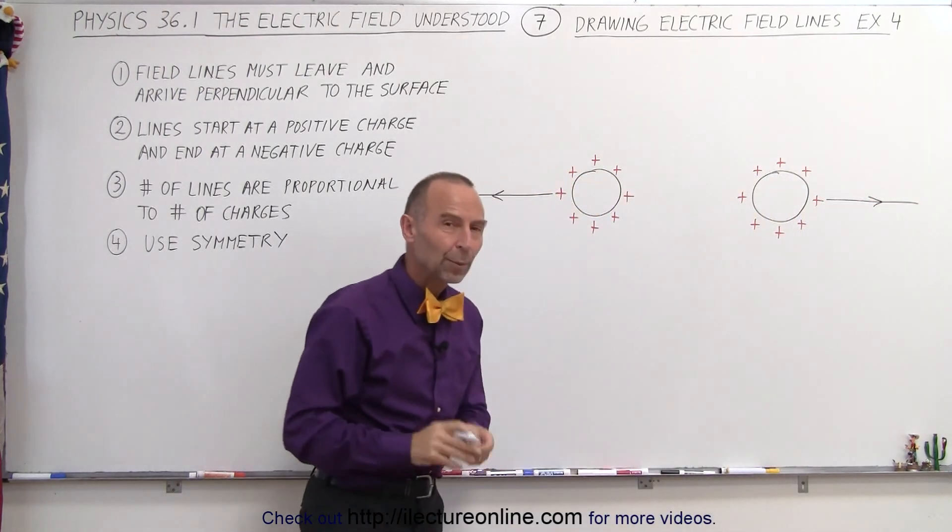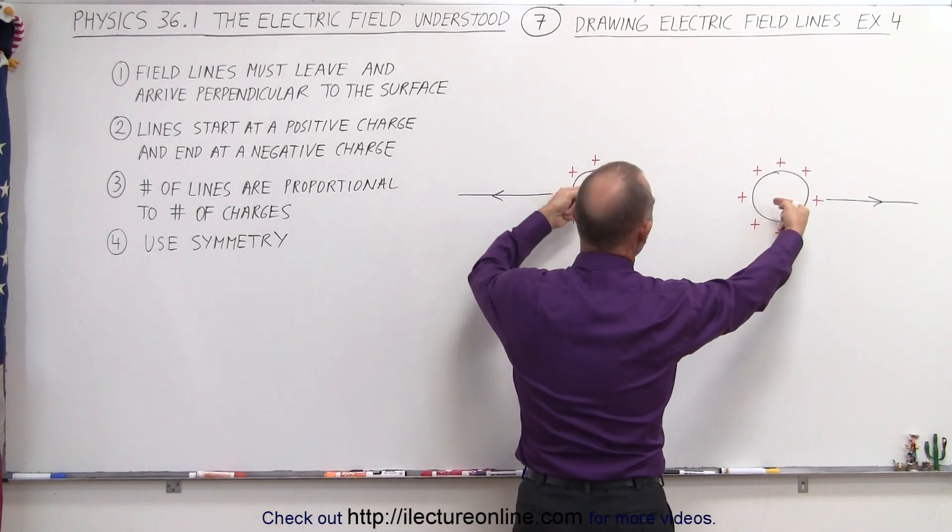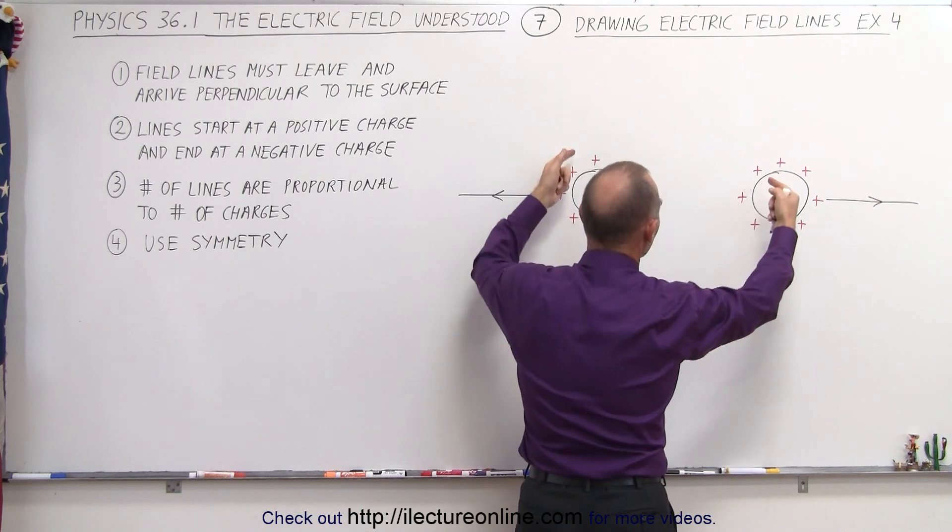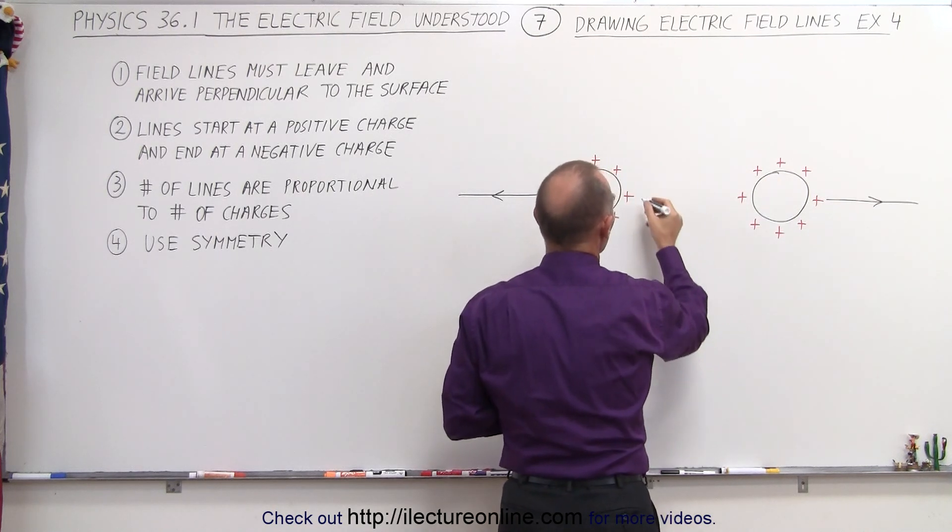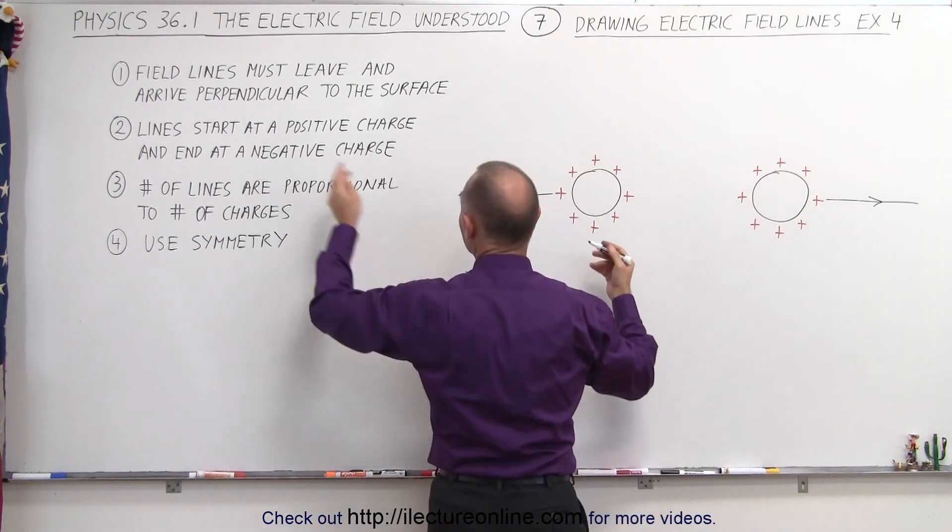But what do we do with the rest? Let's start with the ones that are opposite one another. Obviously, you can see that the field is going towards each other, because they repel each other. And that means that they'll veer off, but you want to maintain symmetry.